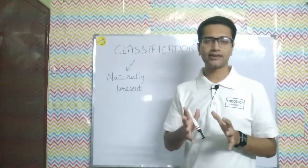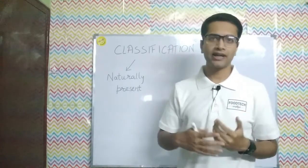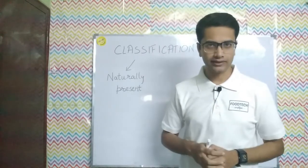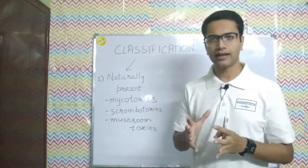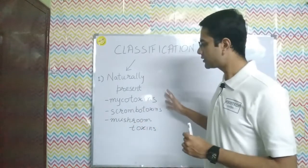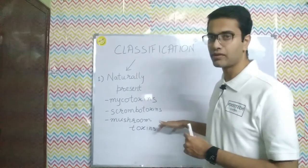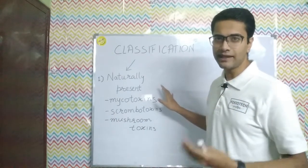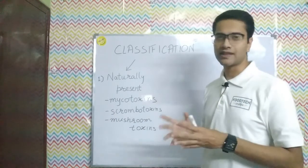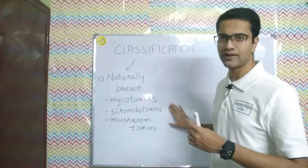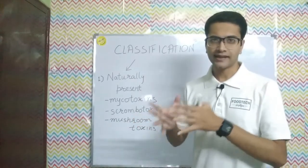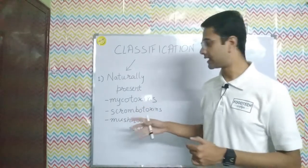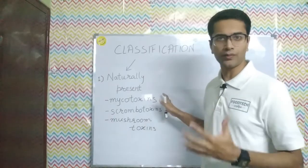The naturally present chemical hazards are not added by some kind of human activity — they are naturally present in the food. Examples of naturally present chemical hazards are mycotoxins, scombrotoxins, and mushroom toxins. Mycotoxins can be present in milk, peanuts, and soybeans. Scombrotoxins are present in fishes. These toxins can produce intoxication inside the human body if ingested, and they are produced by bacteria or molds.